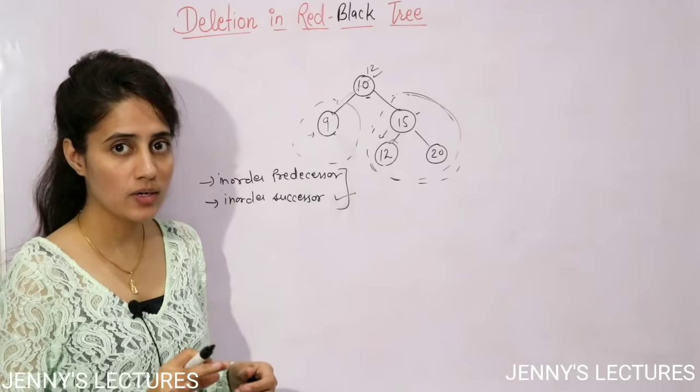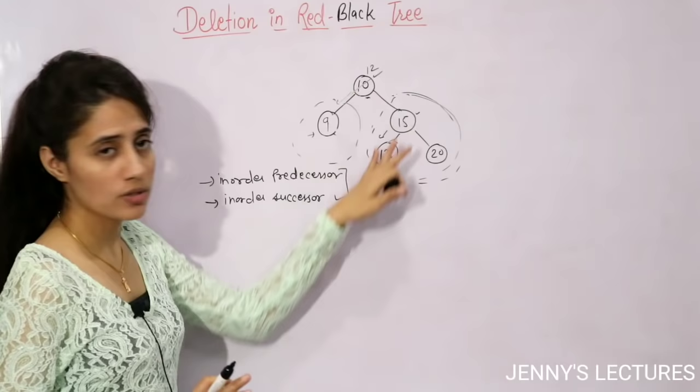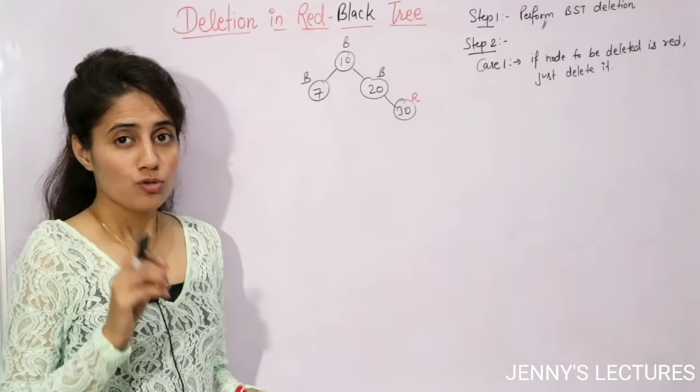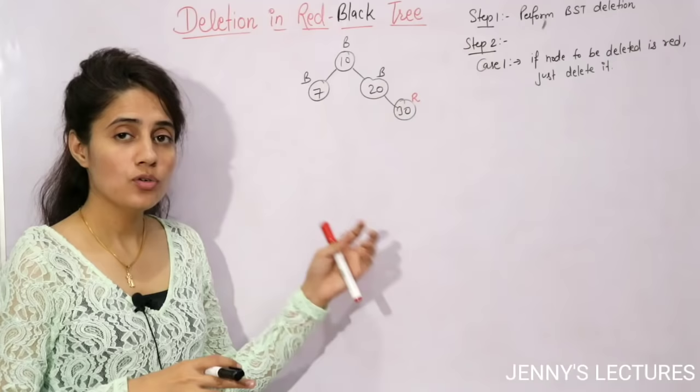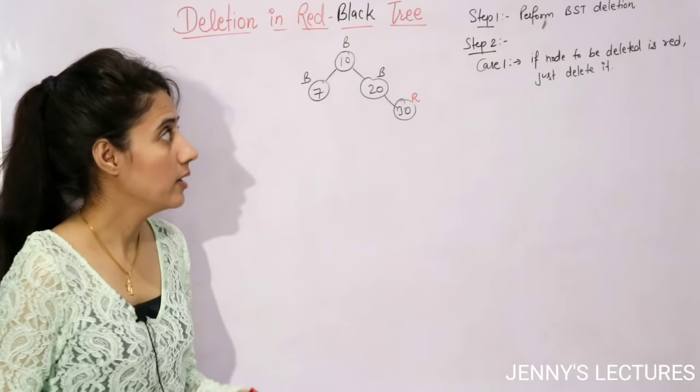The first step in red-black tree deletion is to perform standard BST deletion using these same rules. After that, you need to restore the red-black properties. We will now go through all cases one by one with examples.